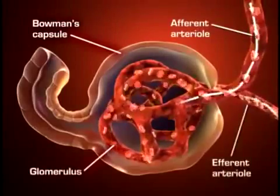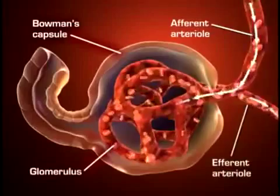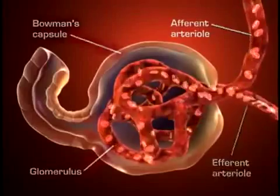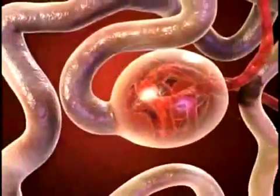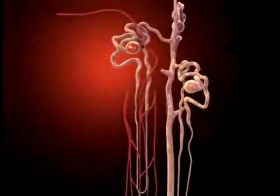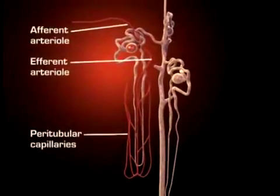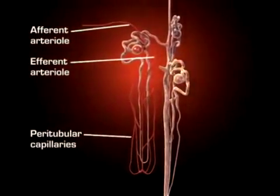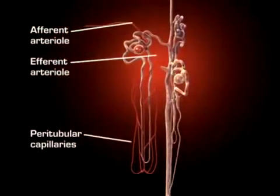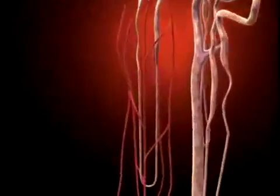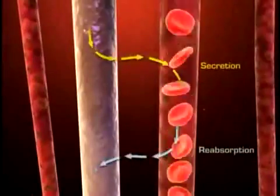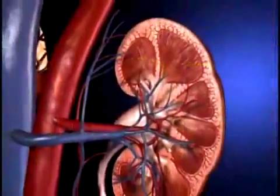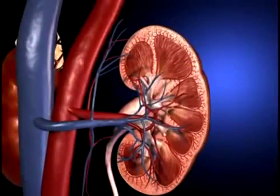The glomerular filtration membrane consists of three layers of capillary wall: the endothelium, the basement membrane, and the epithelium. This membrane allows some particles from the blood to pass through, but not all. The fluid that is filtered from the capillary blood into Bowman's space is called filtrate and forms the primary urine.